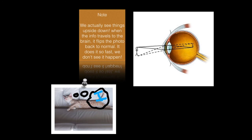Note: We actually see things upside down. When the information travels to the brain, it flips the image back to normal. It does it so fast we don't see it happen.